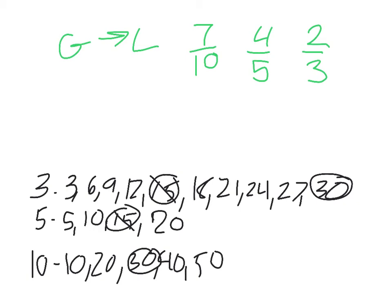So, now I need to convert these. So, seven-tenths times a fraction equals something over thirty. Ten times three is thirty. Make that three over three for one whole. So, twenty-one, twenty-one over thirty.